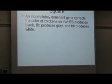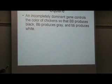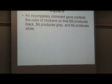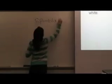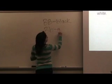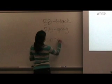An incompletely dominant gene controls the color of chickens, so that homozygous dominant produces black, heterozygous produces gray, and homozygous recessive produces a white chicken. So again, we're going to write down what we know. This time we're using B's instead of R's. But we know that homozygous dominant is a black, heterozygous is gray, and homozygous recessive is white.